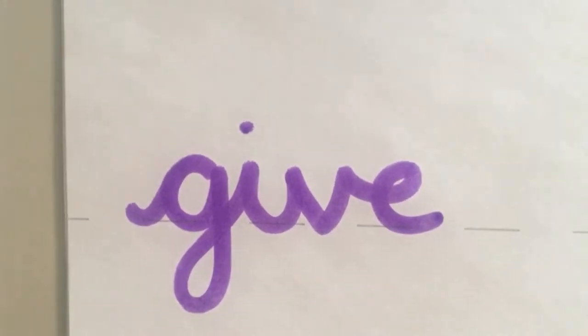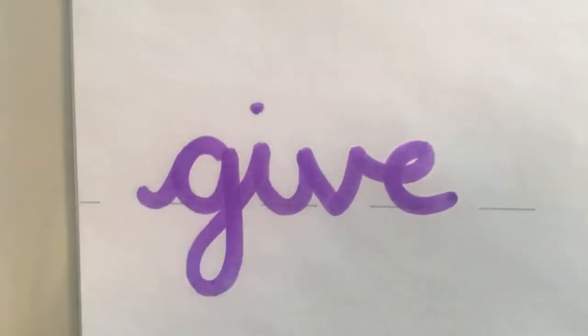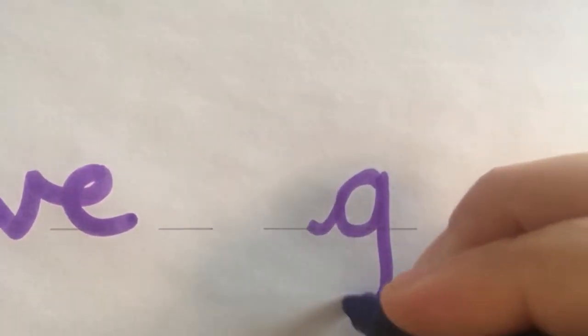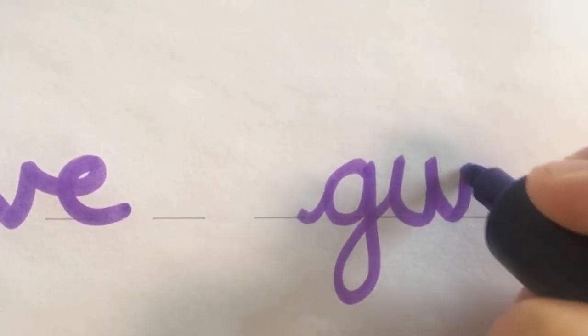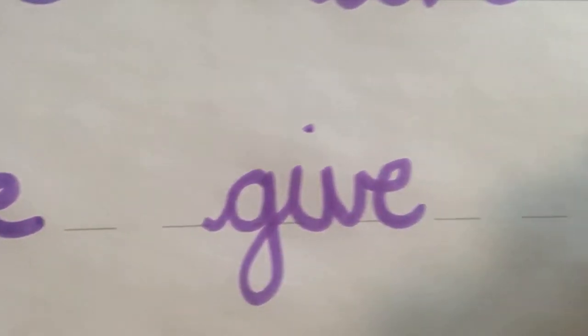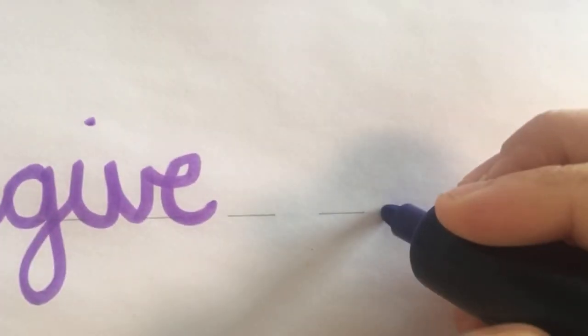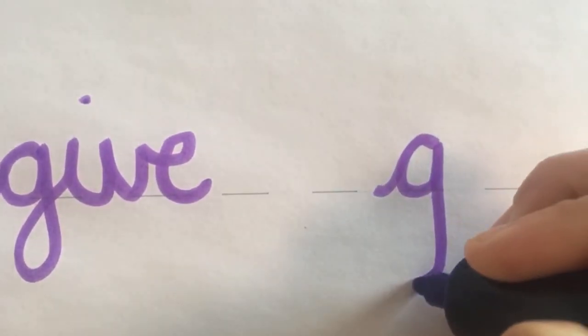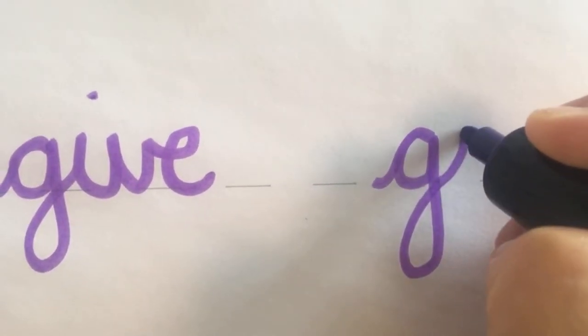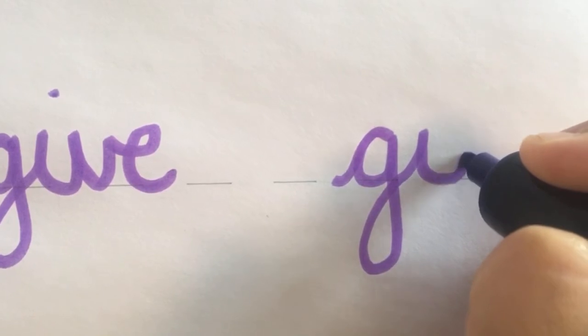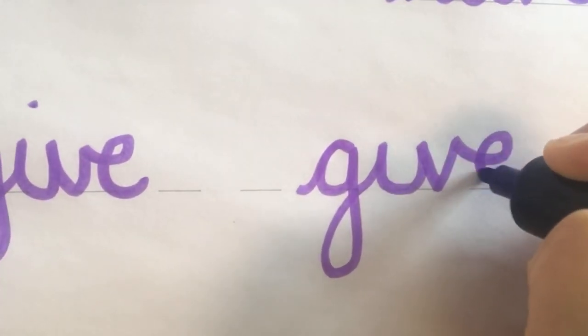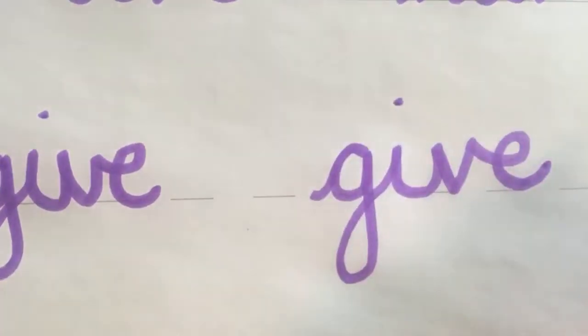And the last word I'm going to show you today is give. So start on the line, into the C shape, up and down below the line for the G, up and down to the line for I, up and down for the V, and then join into the E. Thank you.